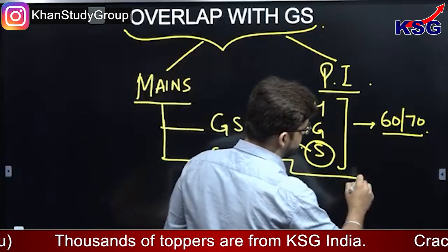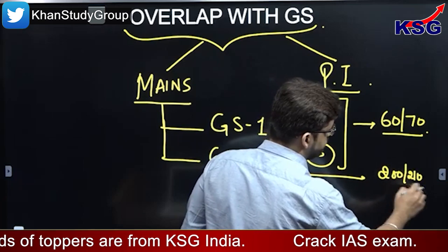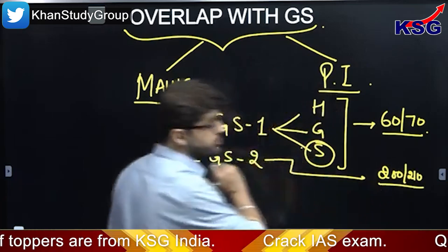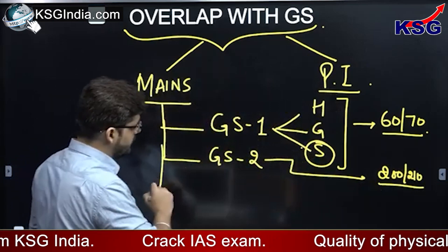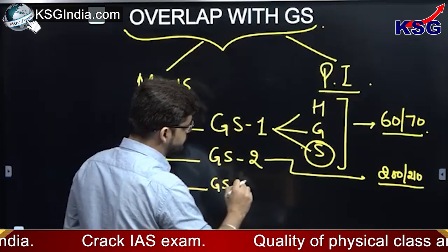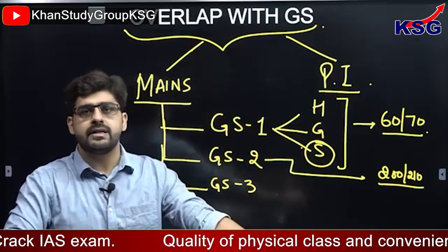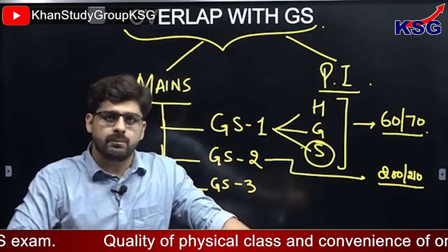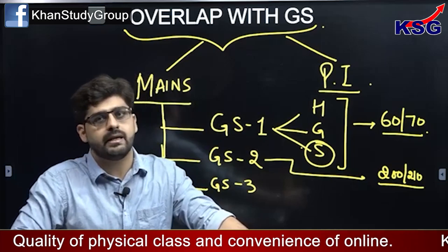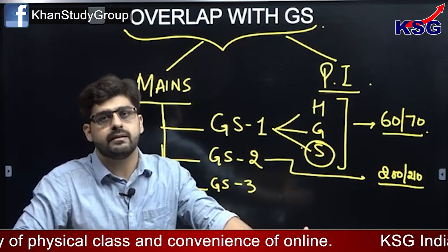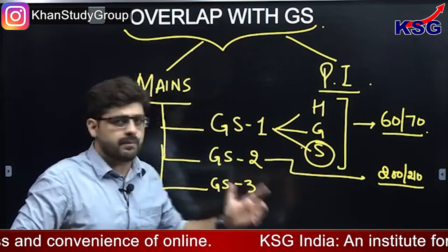However, in spite of that, you can easily have an overlap of 200 to 210 marks in general studies 2. Coming to general studies 3, it is largely divided into economics, science and technology, environment, and internal security. These four aspects cover the general studies 3 paper.